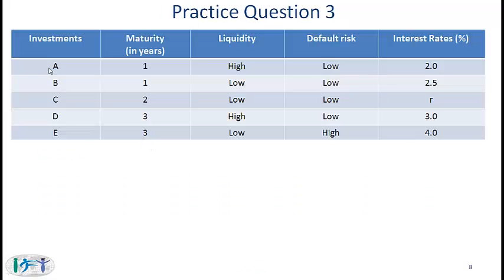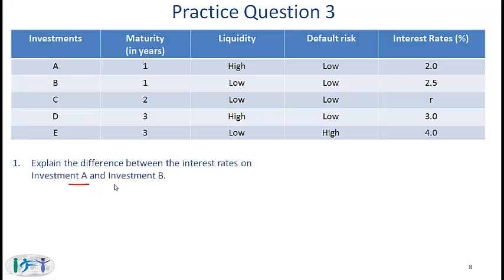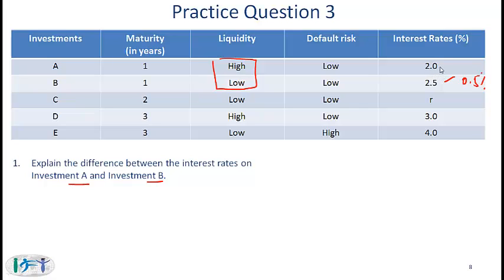Another practice question: given 5 different investments with their maturities, liquidity, default risk, and interest rates — why is there a difference between the interest rate on investment A and investment B? They have the same maturity and the same default risk, but different interest rates. The answer is because of the difference in liquidity. B has lower liquidity, so investors demand a higher return. That difference of 0.5% is the liquidity premium in this example.